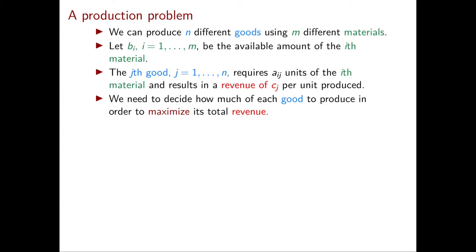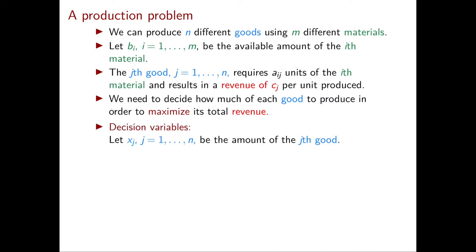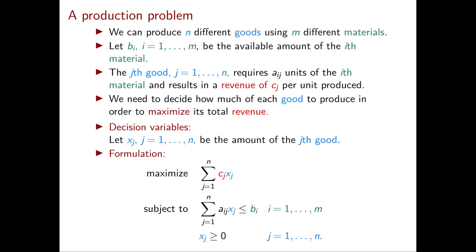The question is what is the optimal strategy in producing these goods — namely how much of each good should we produce in order to maximize the total revenue? Every time we have an optimization problem stated in words, the first thing we should do in order to translate it into a linear programming problem is to write down the decision variables. In our case we need to decide how much of each good to produce, so we introduce the decision variable x_j representing the amount of the j-th good that we produce.